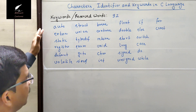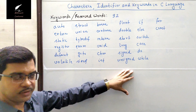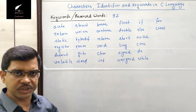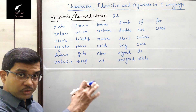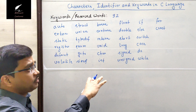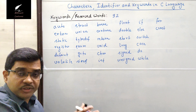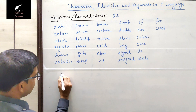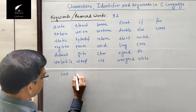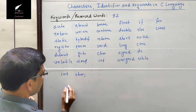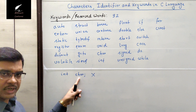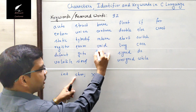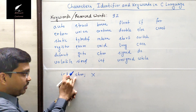So these are the 32 different keywords which are mainly used in C language. In some compilers there may be more than 32 keywords, but I am talking about the C89 compiler, where 32 different keywords are used. These are reserved words — already reserved by the system. For example, you cannot declare an integer variable as 'int char', because char is already a keyword and cannot be used as a variable name.